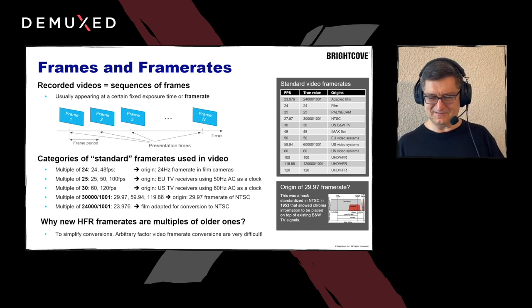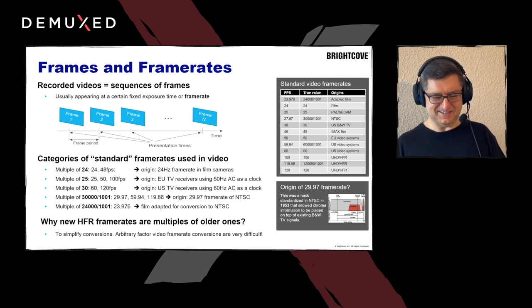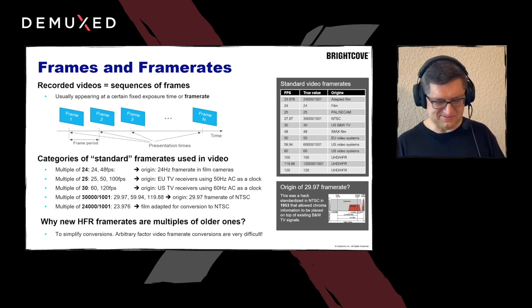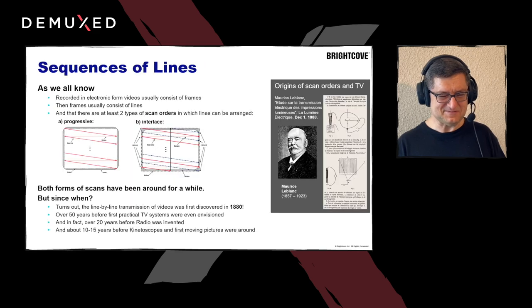And here we go — now we have 29.97 and a whole train of fractional frame rates. Ultra HD now officially supports 119.88, which is still a multiple of that strange 29.97 choice.